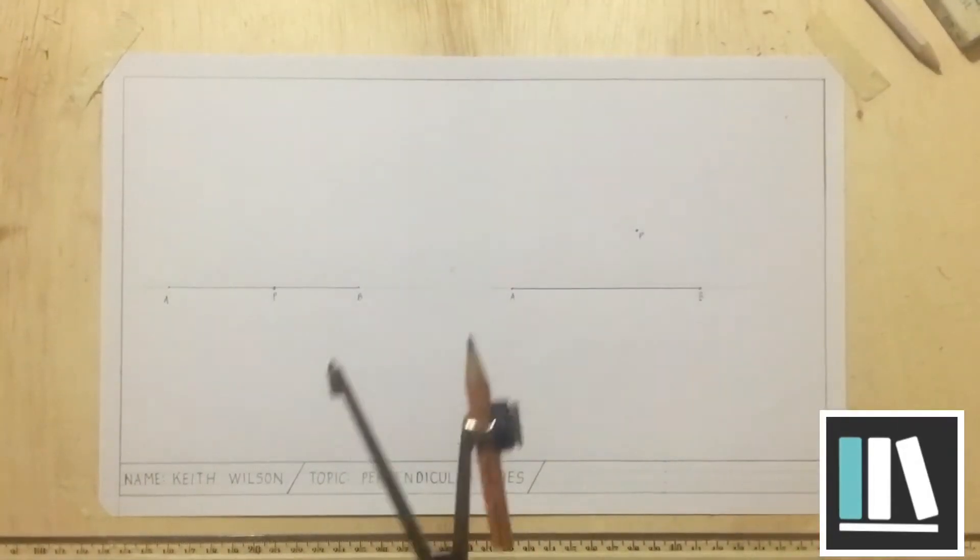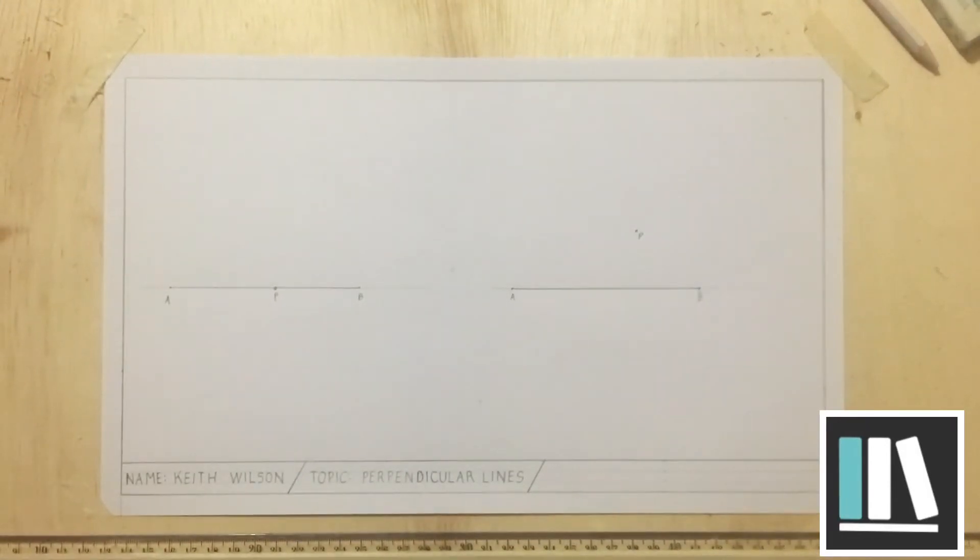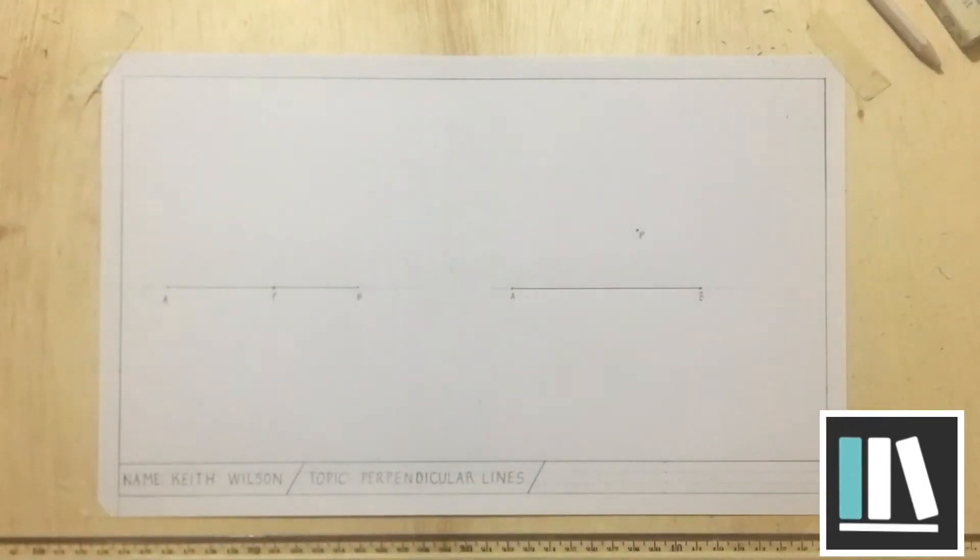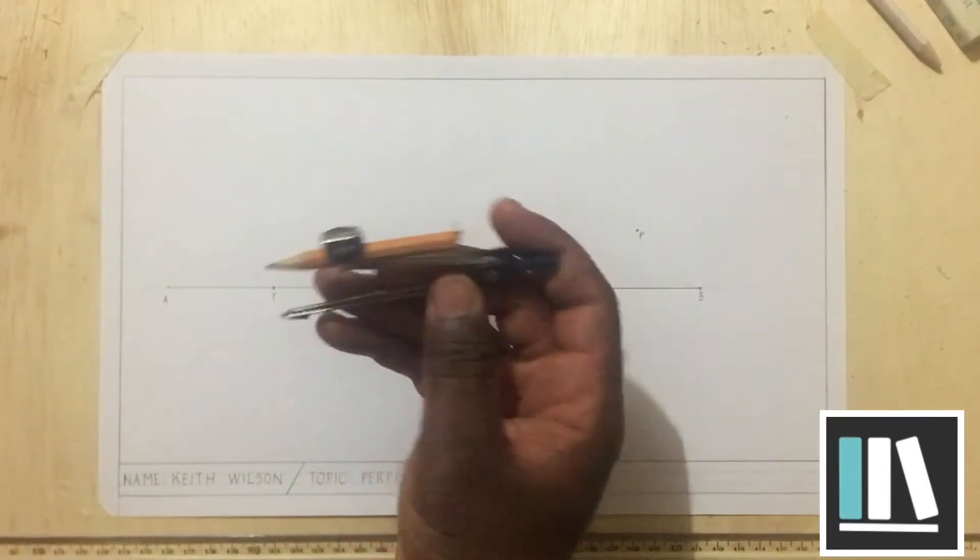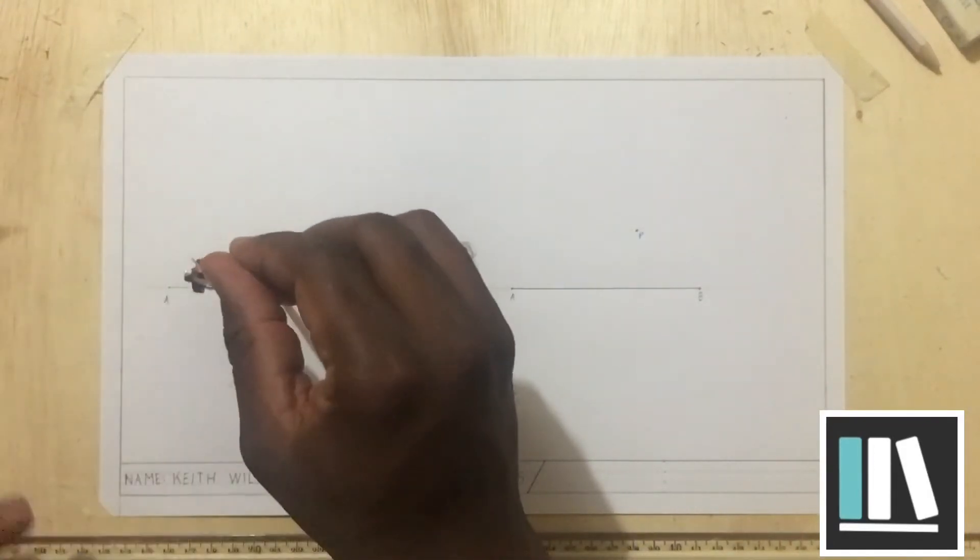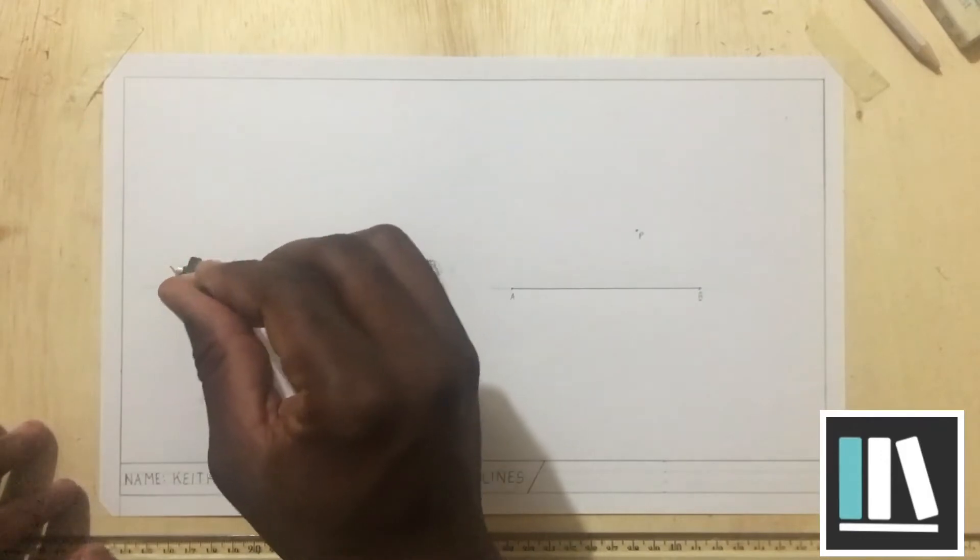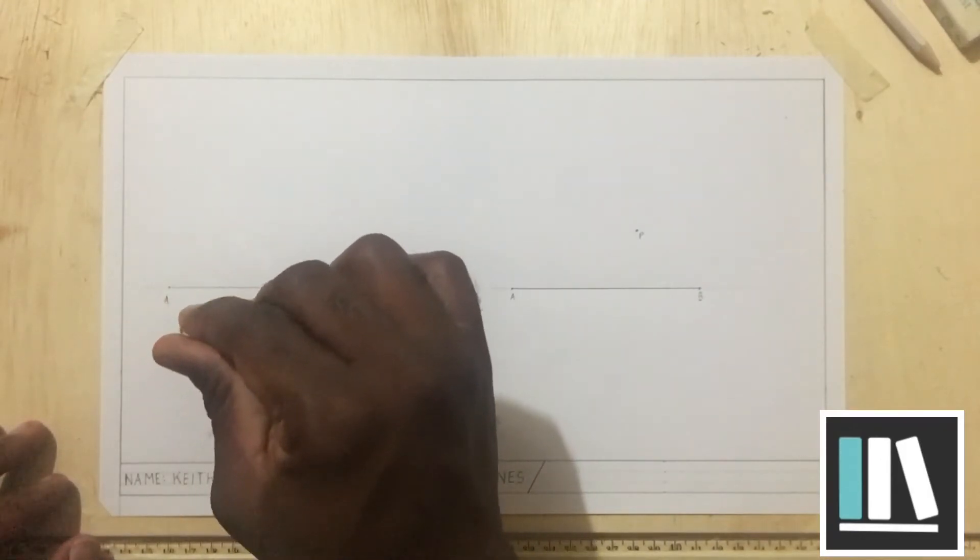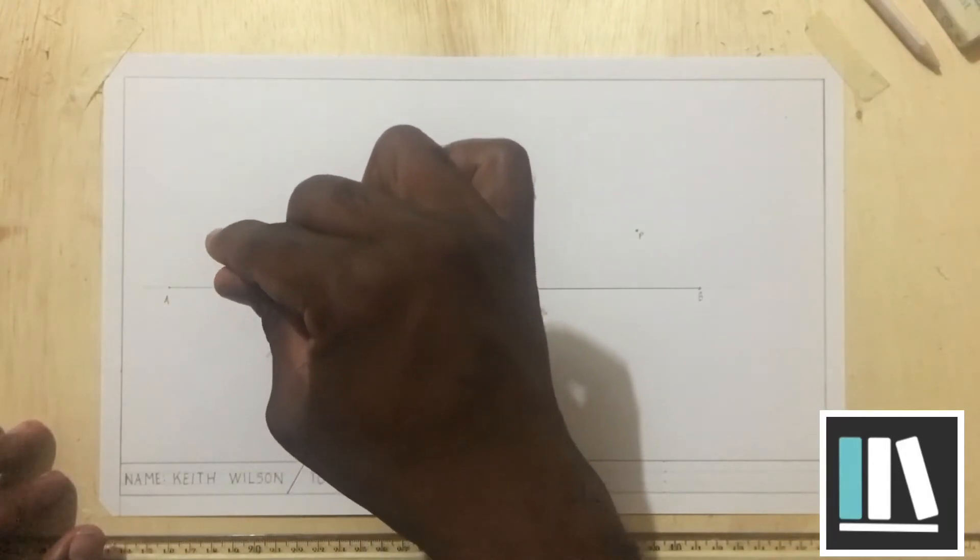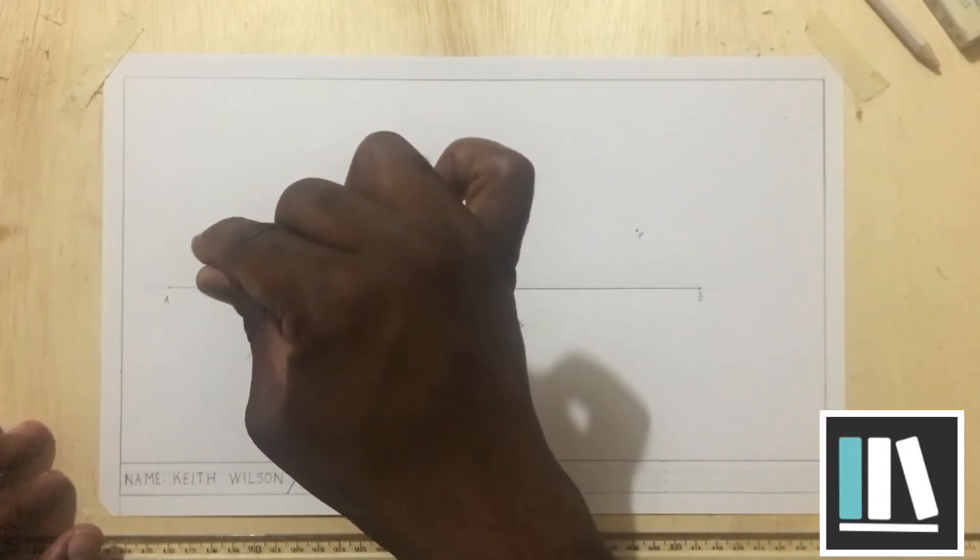You will need your compass. You are going to open your compass to a convenient radius. Once you have done this, you are going to place the compass point on point P and draw an arc that will cut the line at both the left and the right.